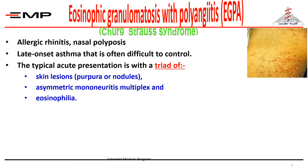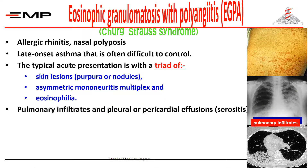There is asymmetric mononeuritis multiplex — affecting one or more nerves on each side differently, hence it cannot be called polyneuropathy — either sensory or motor. There is also eosinophilia with a high eosinophil count in the peripheral blood. Additionally, pleural effusion or pericardial effusion (serositis) may be present, along with pulmonary infiltrates on chest X-ray.